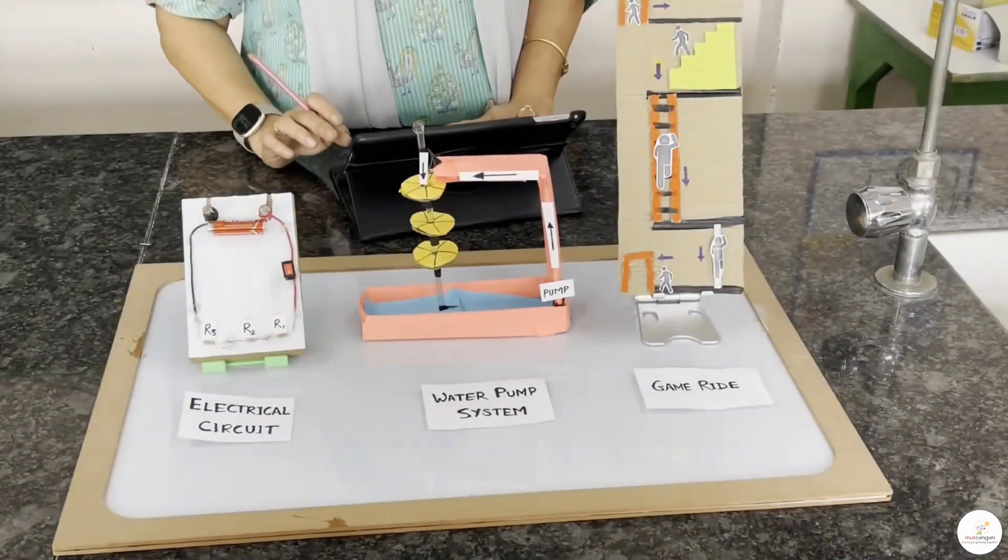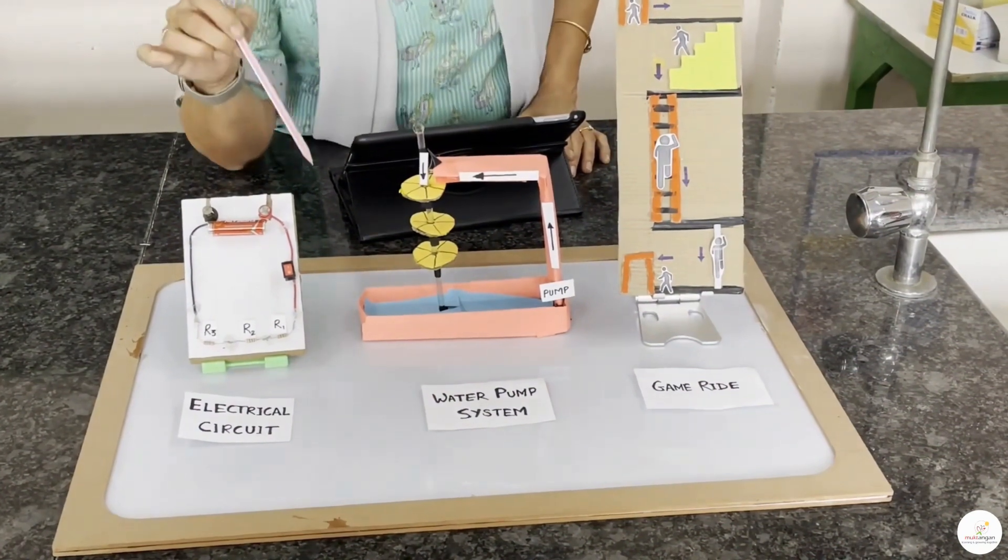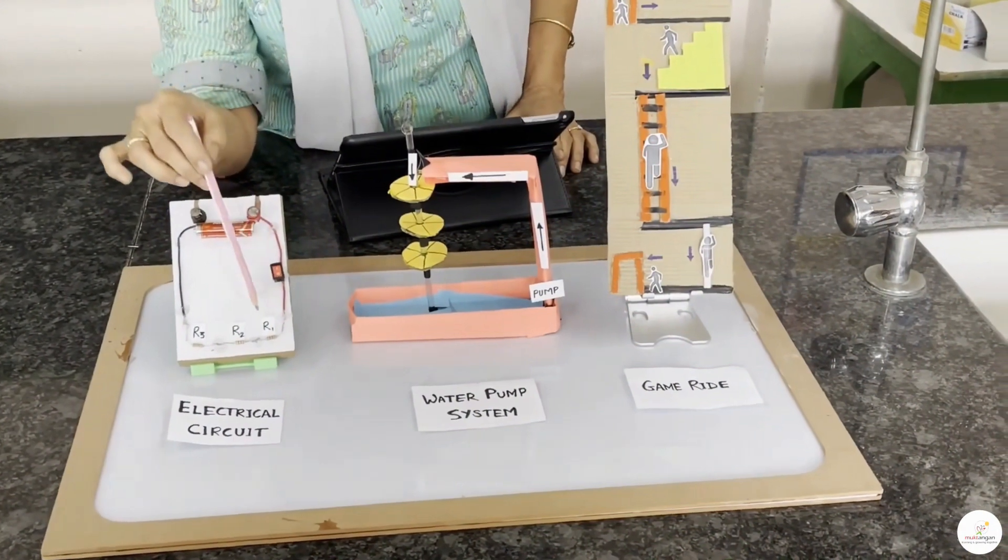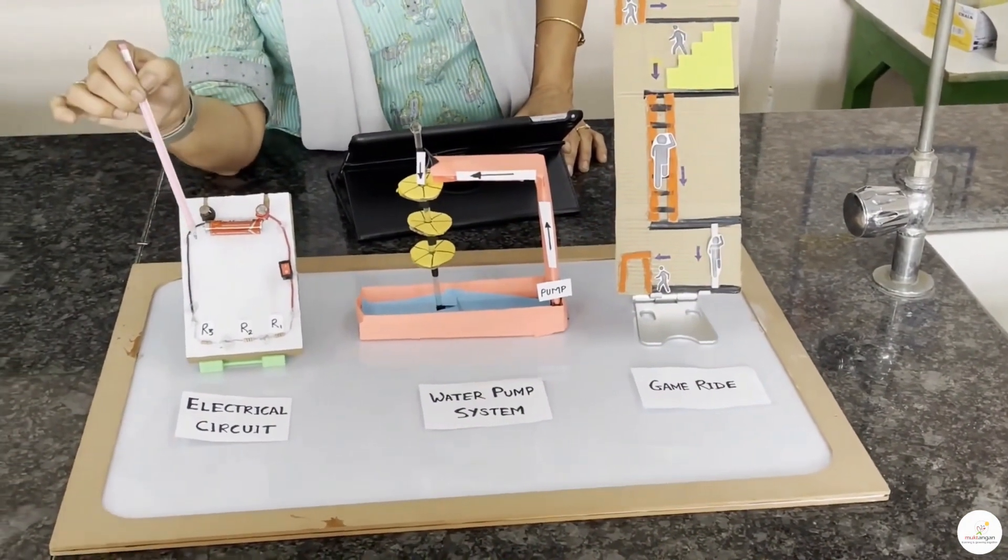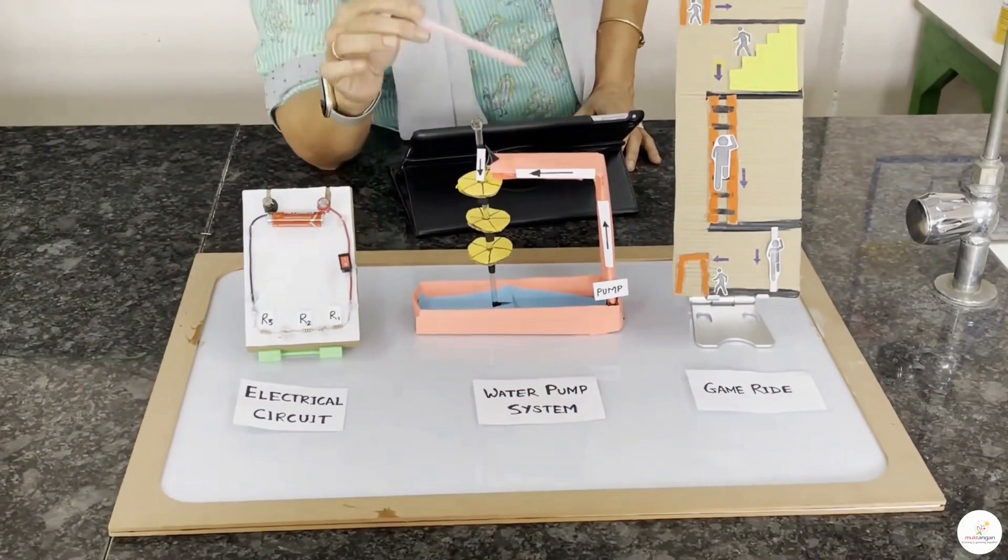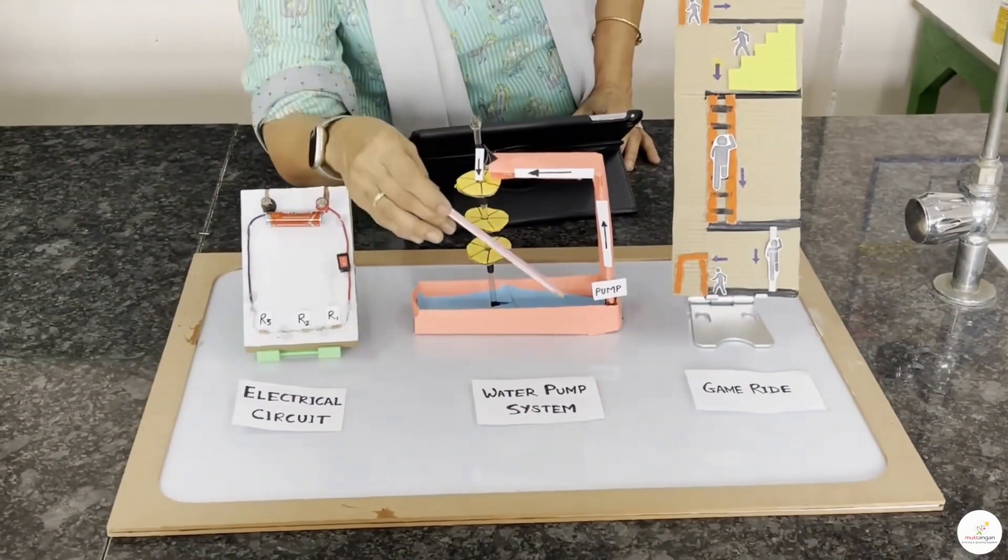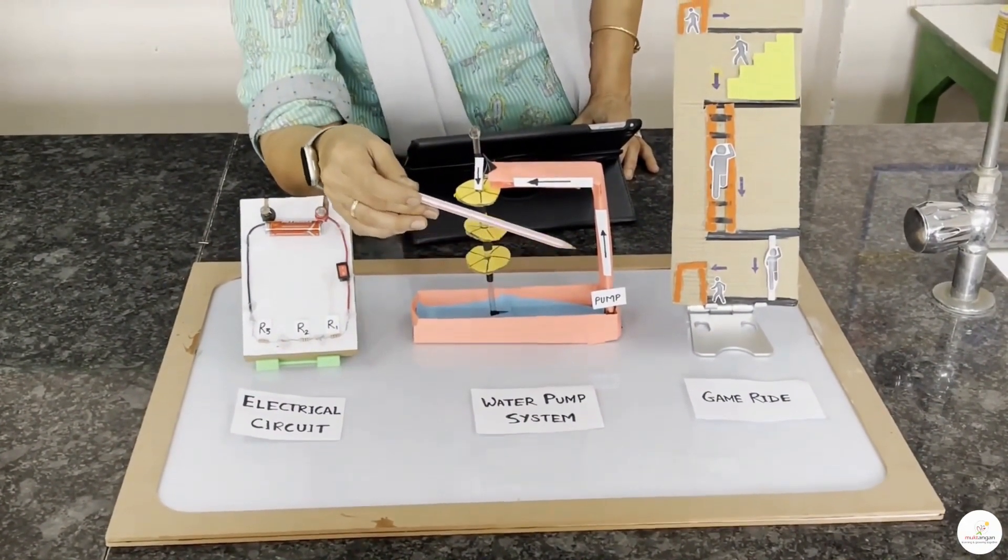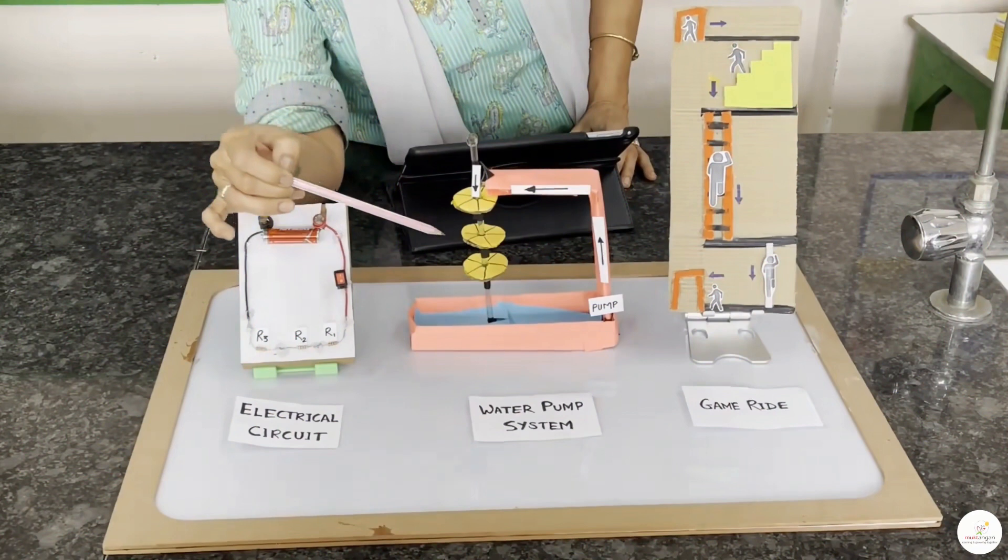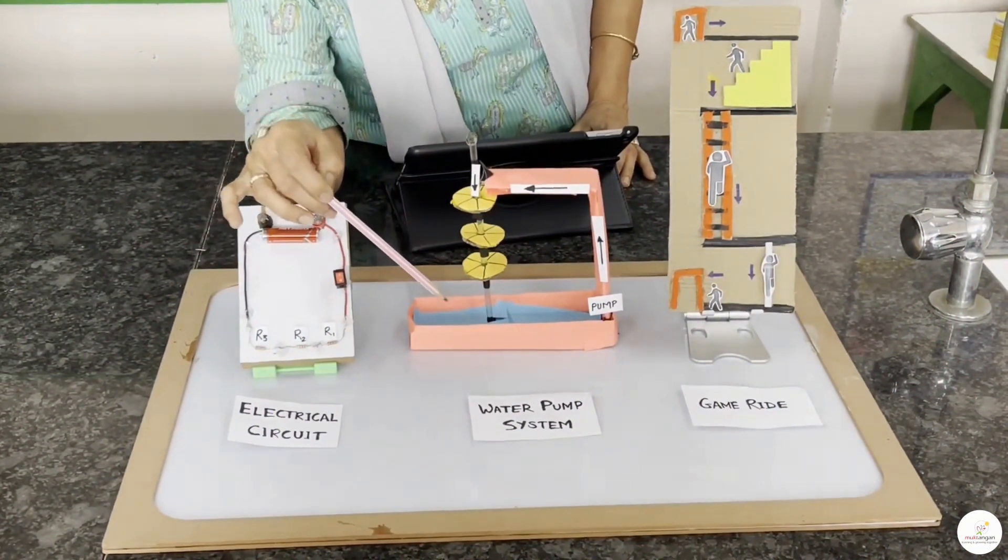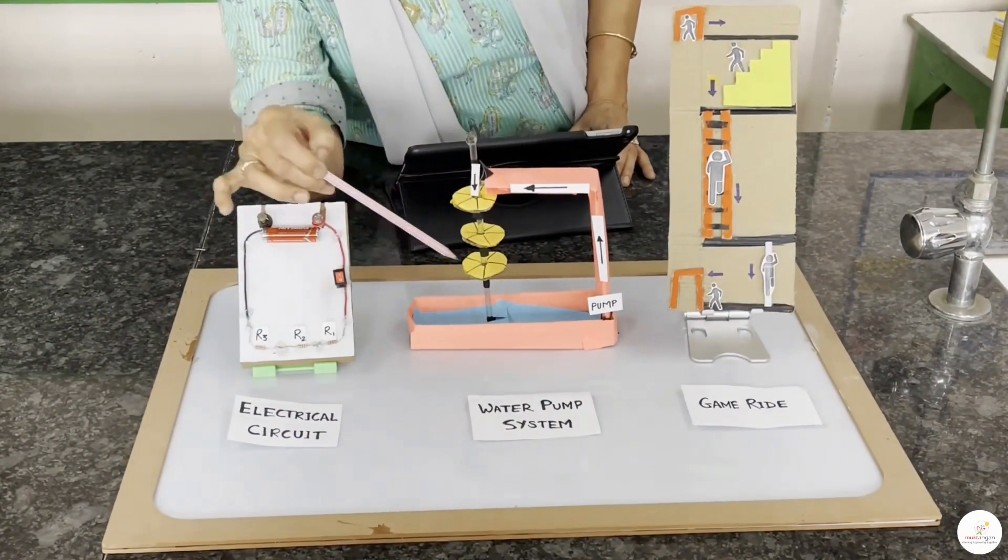Let's use a couple of analogies. As you can see, I have three models here. Let me explain them to you. The first one, of course, is a simple circuit that has three resistors R1, R2 and R3. Current flows through each of them. Now, let's move on to our next model. This unique model represents a water pump system. It has a pump attached at the bottom. The pump pushes the water up to the top from where it flows down through the wheels making them turn.